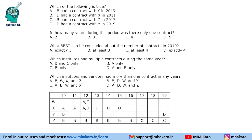Question 2: Which of the following is true? Option: B had a contract with Y in 2019 — false. D had a contract with X in 2011 — also false. B had a contract with Z in 2017 — checking the table... D had a contract with Y in 2019 — that is true.